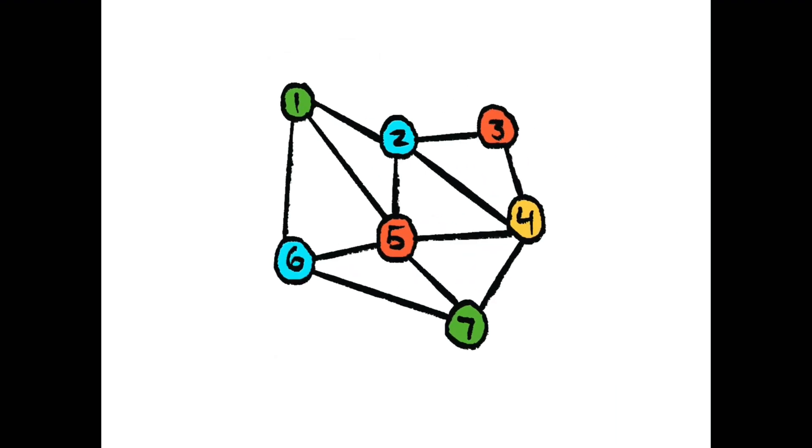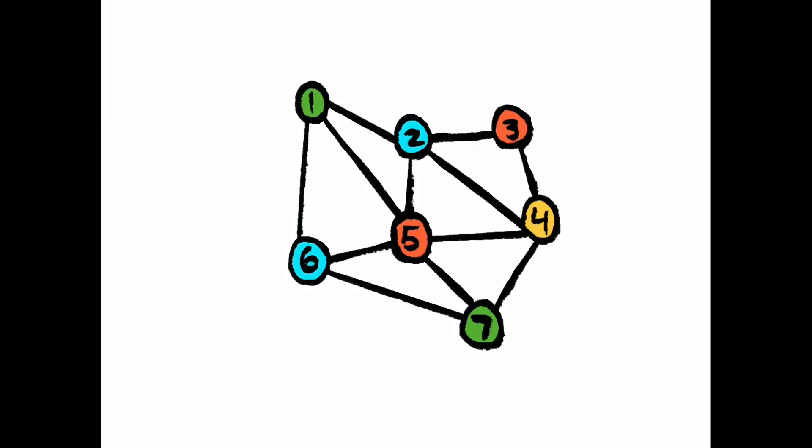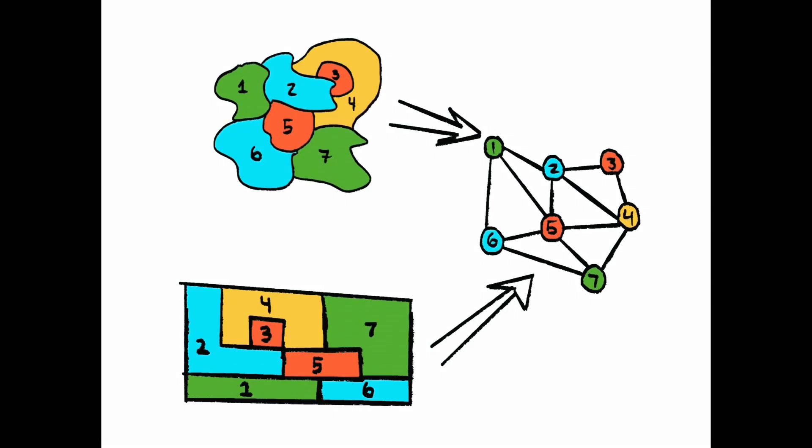Instead of trying to look at all the possible maps to see if we can color them so that no two touching countries are the same color, let's look at all the possible types of graph structures that we can form. The corresponding rule for our graph structures is that no two connected vertices can be the same color.